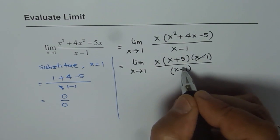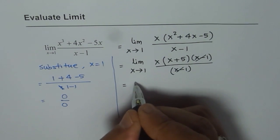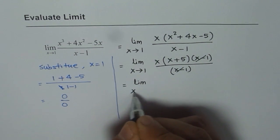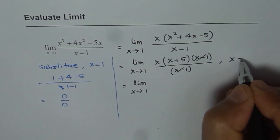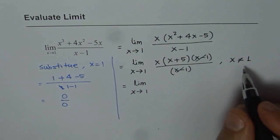Now x minus 1 and x minus 1 cancel out. We have limit x approaches 1. So whenever you cancel, you should write x is not equal to 1. There is a discontinuity, a hole at x equals to 1.